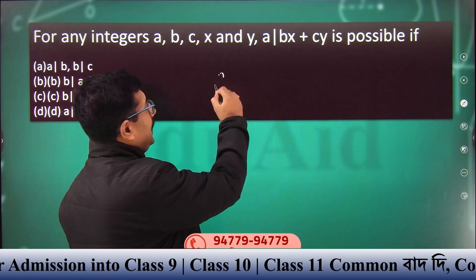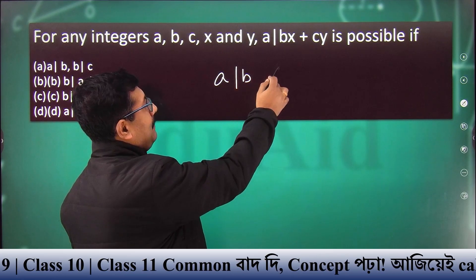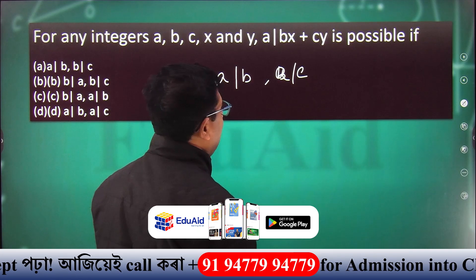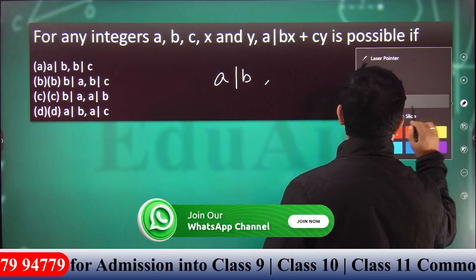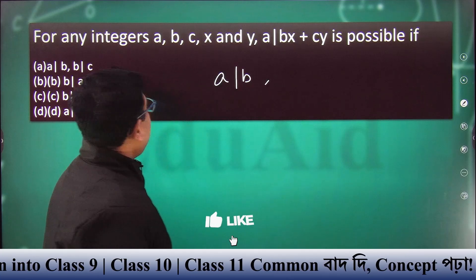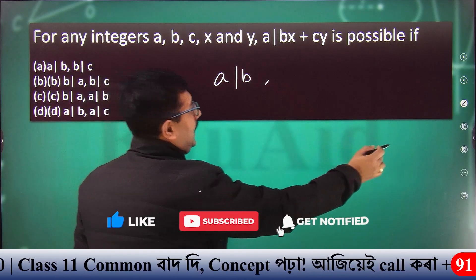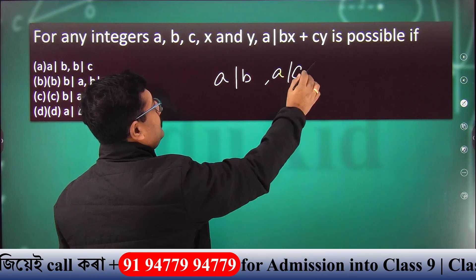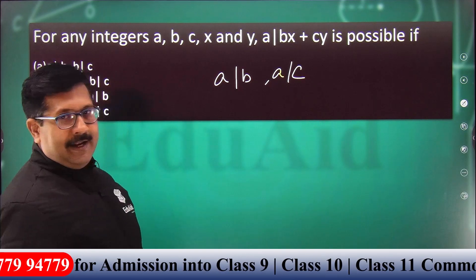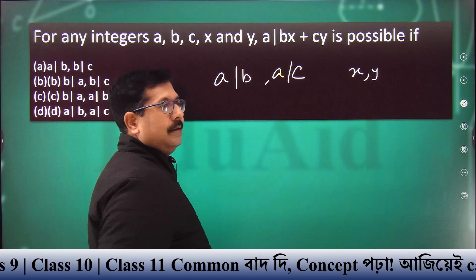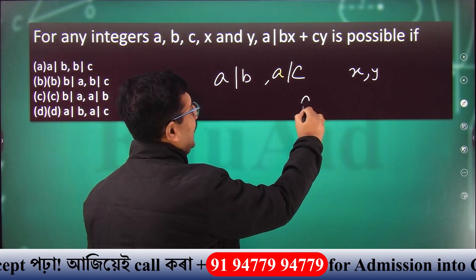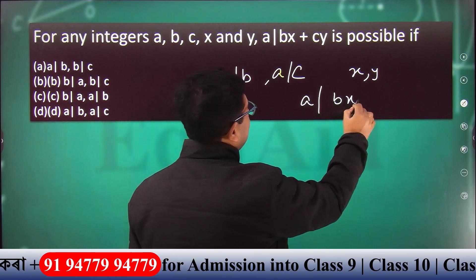So, if A divides B and A divides C, then there exist integers X and Y such that A divides BX plus CY.